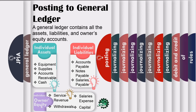In liabilities, we have accounts payable, notes payable, and salaries payable. And lastly, in owner's equity, we have service revenue, salaries expense, withdrawals, and capital. These are only a few examples of the various account titles that you will encounter later on.